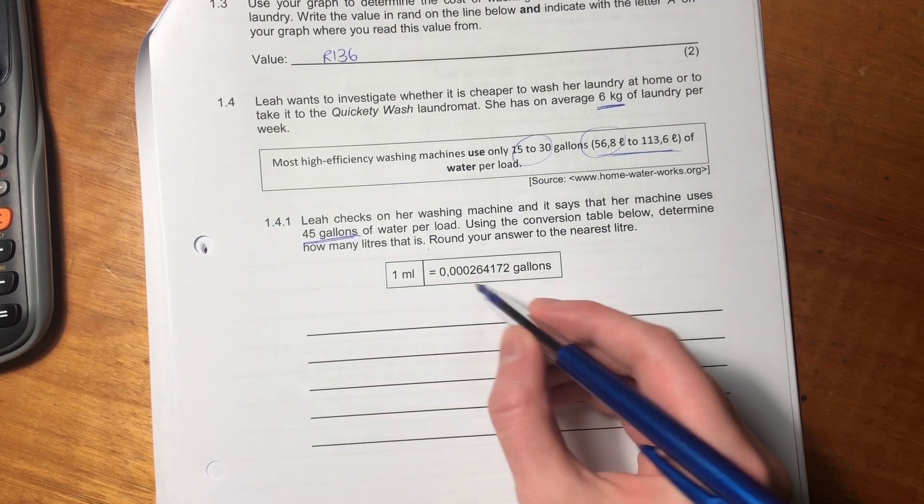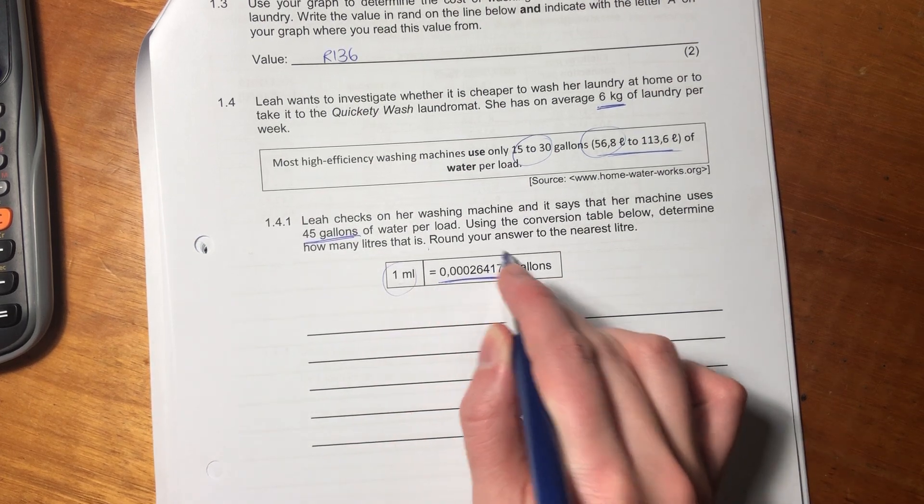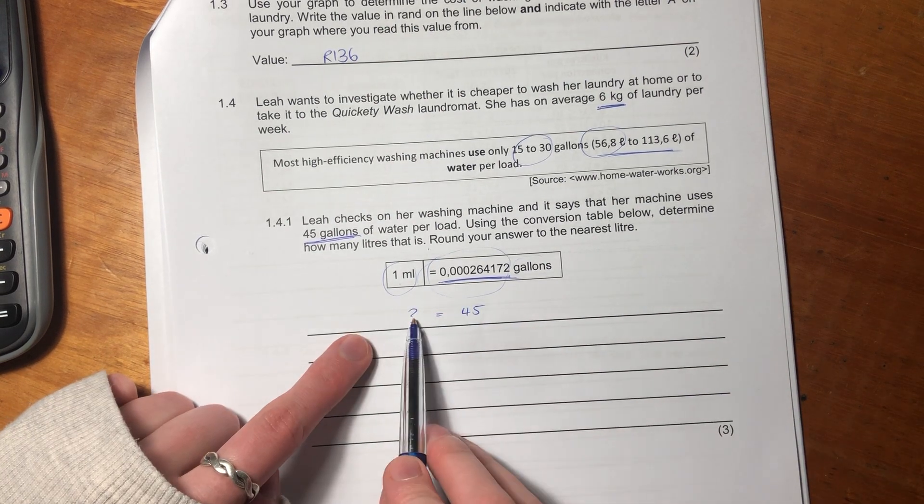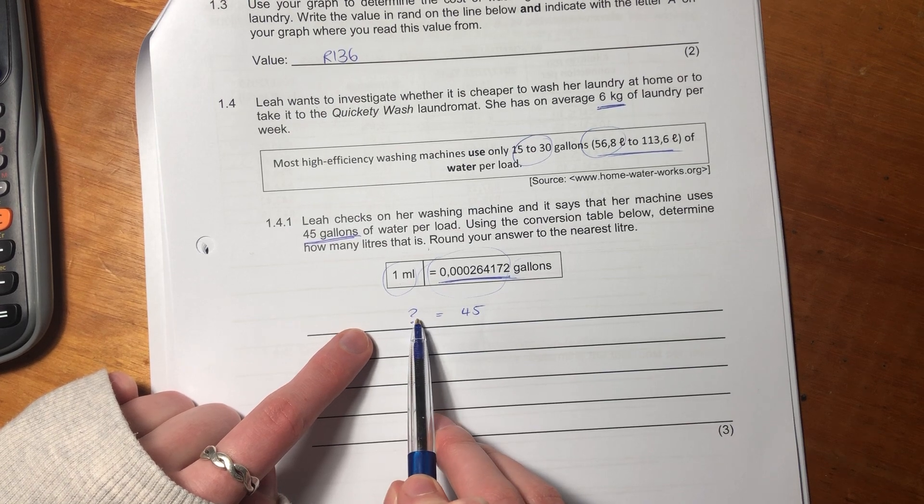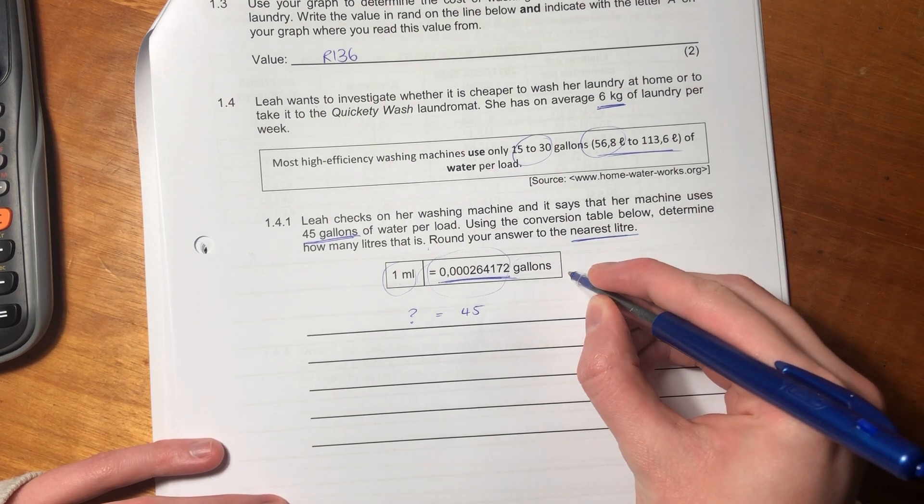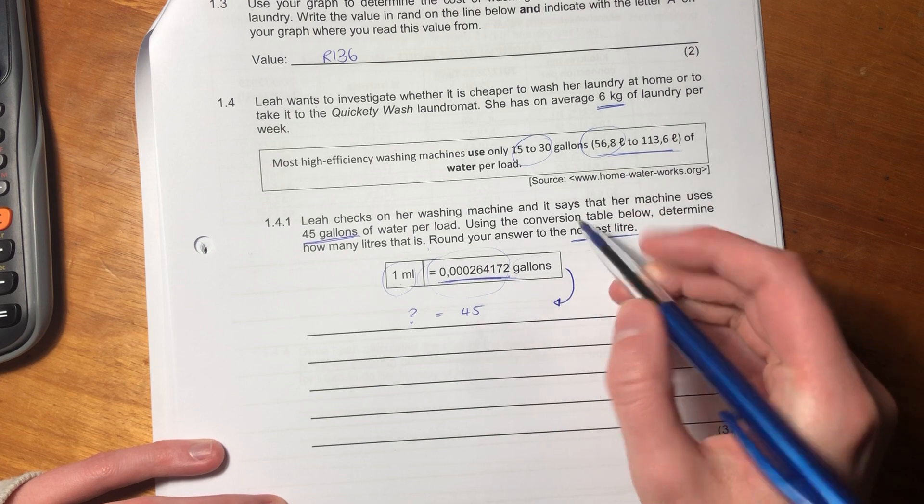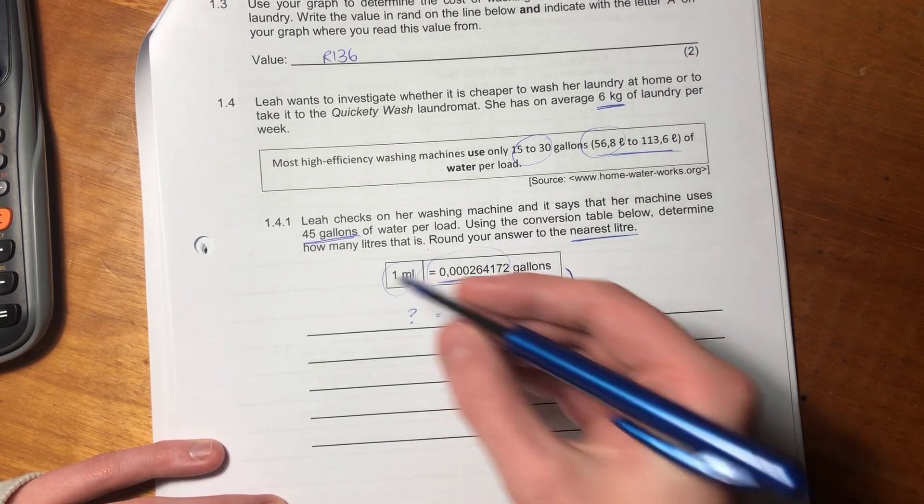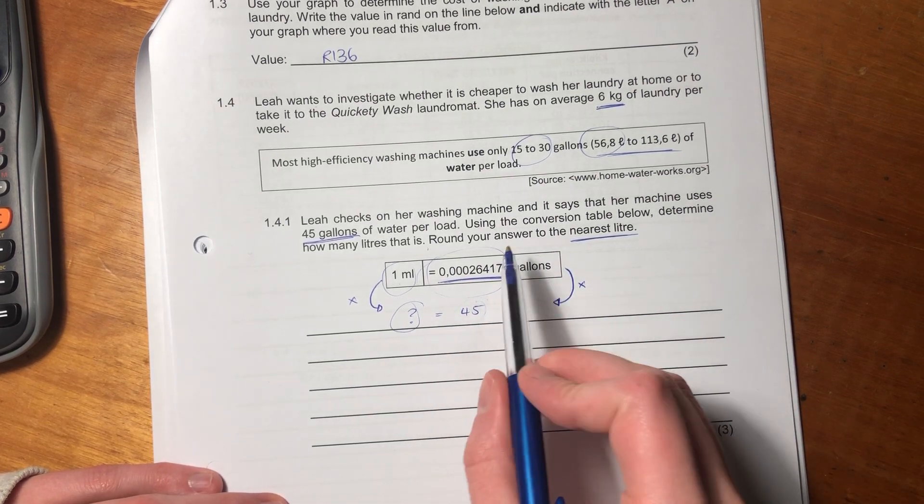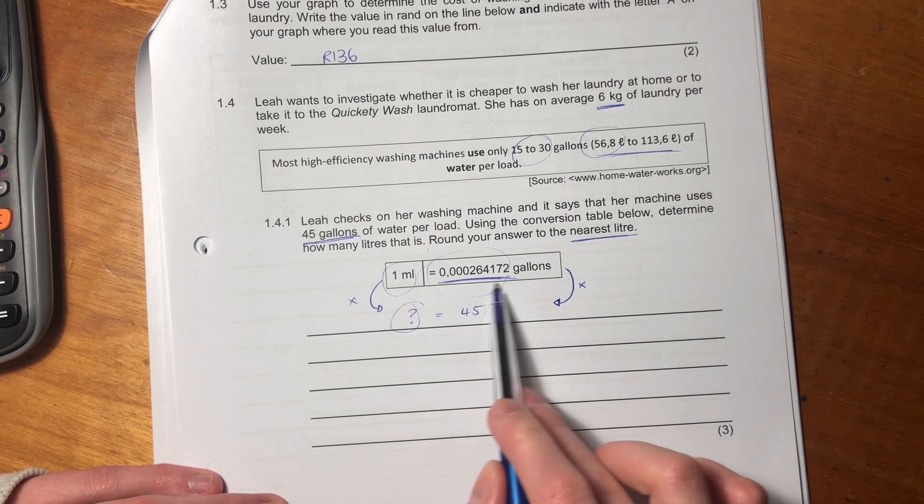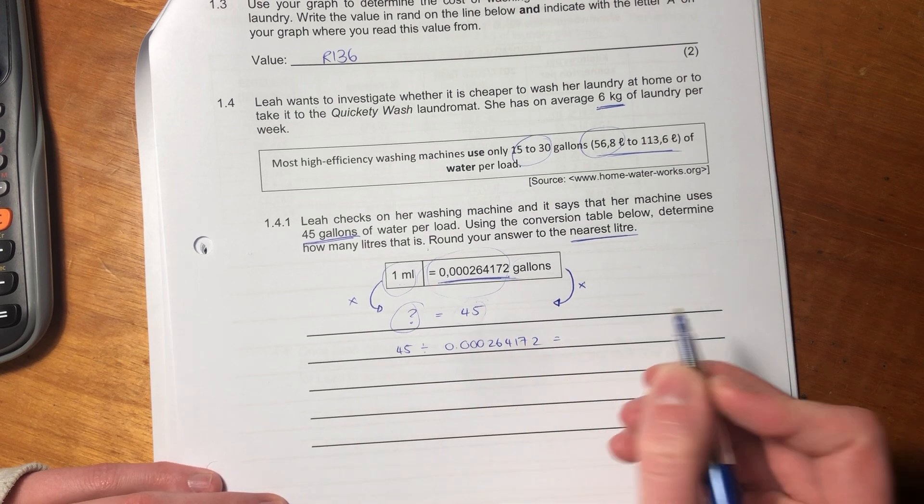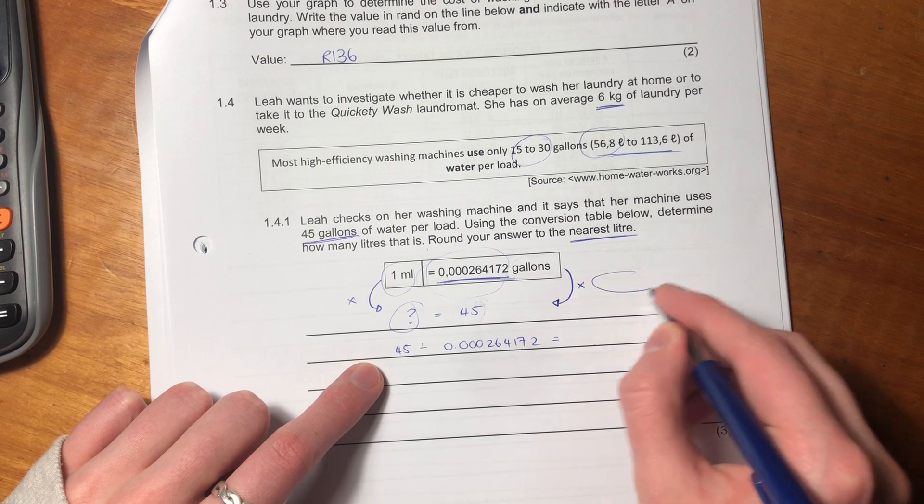They've given us one mil gives us this many gallons. One mil is a very small portion of a gallon. So we know that we have 45 gallons on this side and we want to figure out how many milliliters it is first, and then we have to convert that to liters because they've asked us to the nearest liter. So we need to figure out what we had to multiply this side by to get to 45, and then we multiply one by that same amount and then we'll get the number of milliliters.